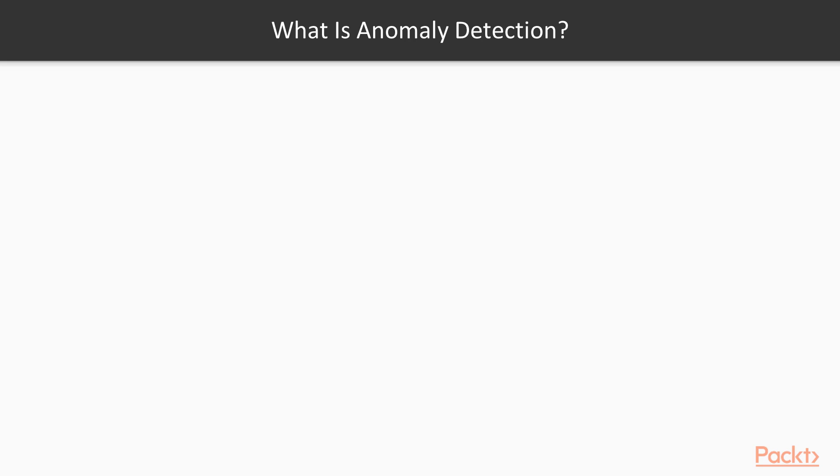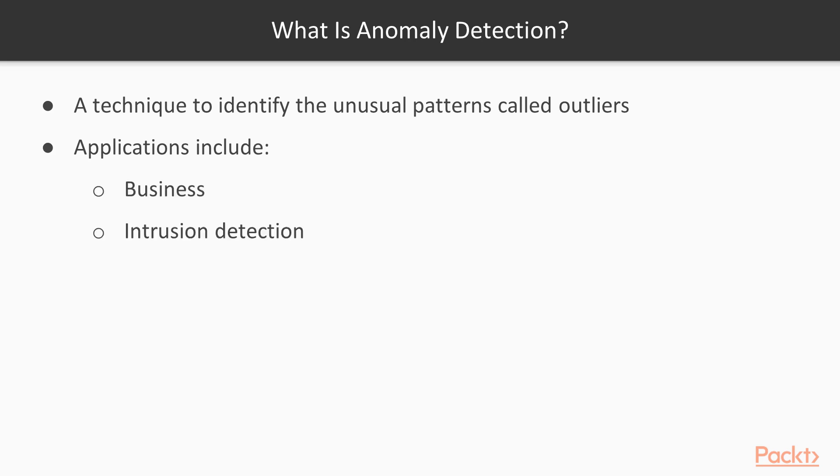What is anomaly detection? Anomaly detection is a technique used to identify unusual patterns that do not conform to the expected behavior and they are often called outliers. It has many applications in different fields such as in business, in intrusion detection, which is relevant to identify strange patterns in the network traffic that could signal a hack, in system health monitoring, which is about spotting a malignant tumor in an MRI scan, in fraud detection in credit card transactions, and fault detection in operating environments.